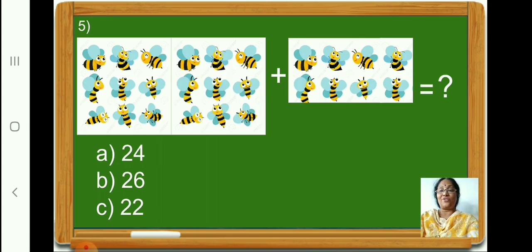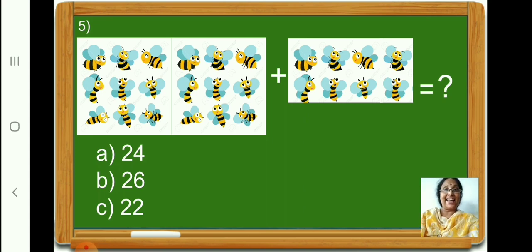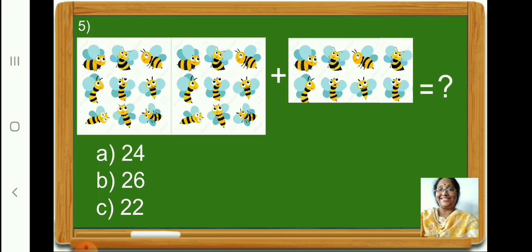Now let us solve question number 5. Count and see how many honeybees are there in the left hand side box. Yes, there are 18 honeybees in the left hand side box. And how many honeybees are there in the right hand side box? Yes, there are 8 honeybees. Therefore, 18 plus 8 is equal to 26. Therefore, you have to pick the correct option B, 26. For solving these kind of questions, you can use your rough book.